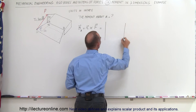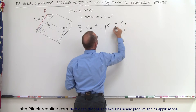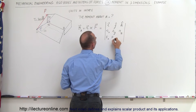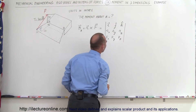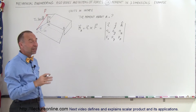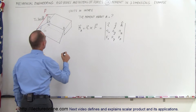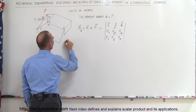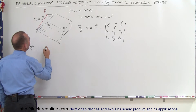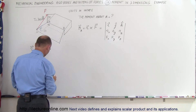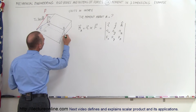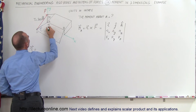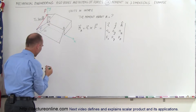This cross product equals the matrix with unit vectors I, J, and K in the first row; the X, Y, and Z components of the position vector in the second row; and the X, Y, and Z components of the force in the third row. For the coordinate system, X goes in this direction, Y goes in this direction, and Z goes in this direction.